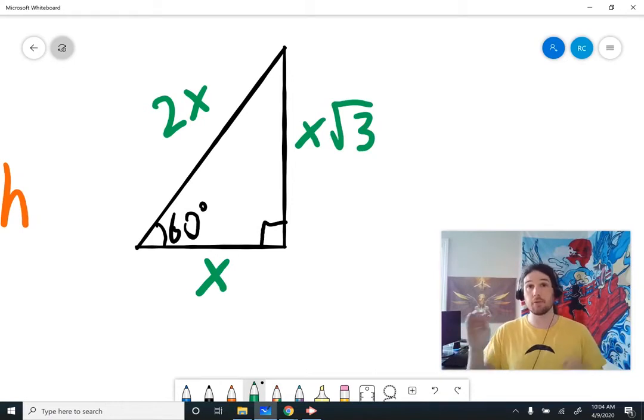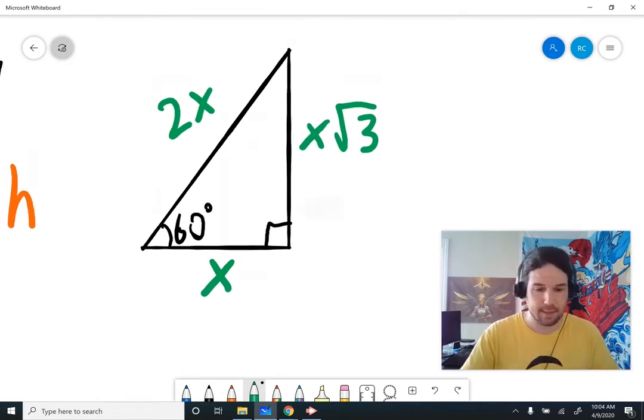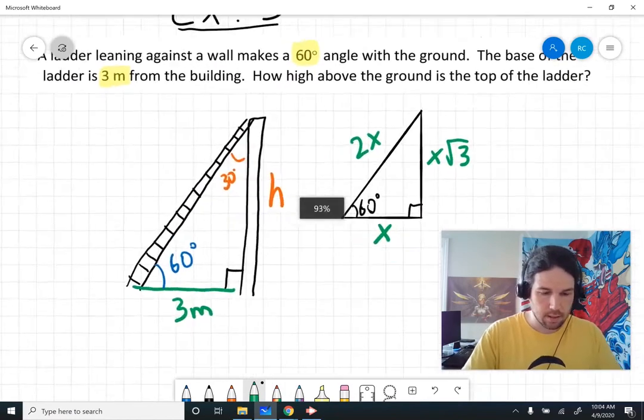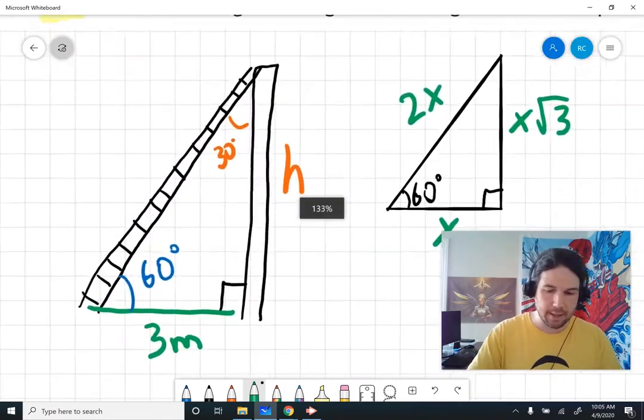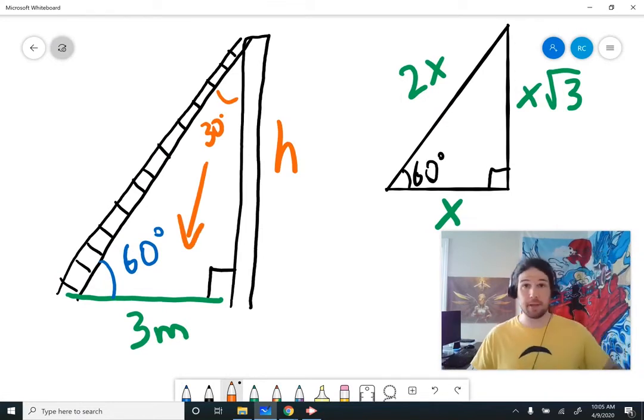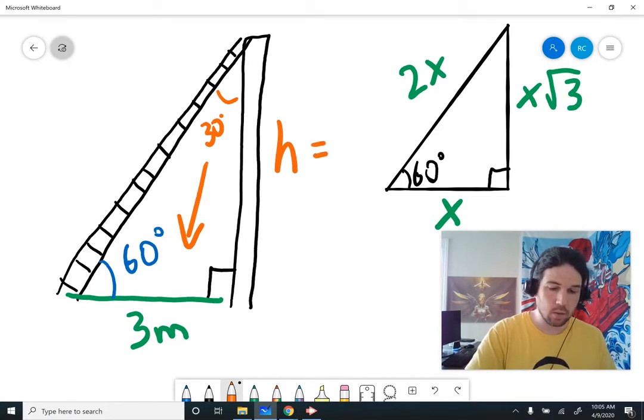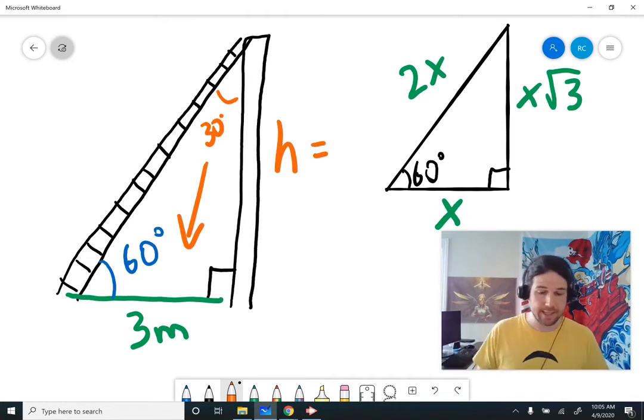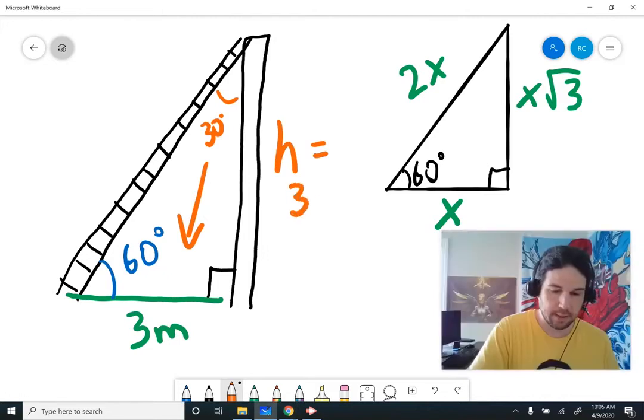Again, if you don't remember that, that's normal. It should be in your notes. You should not be, I mean, you can memorize it if you want, but it's not necessary. So in our ladder example, we have the short leg across from the 30-degree angle, and that's 3 meters. So that means that H is going to equal, well, in a 30-60-90 triangle, the long leg is the short leg times the square root of 3, so it's going to be 3 times the square root of 3.